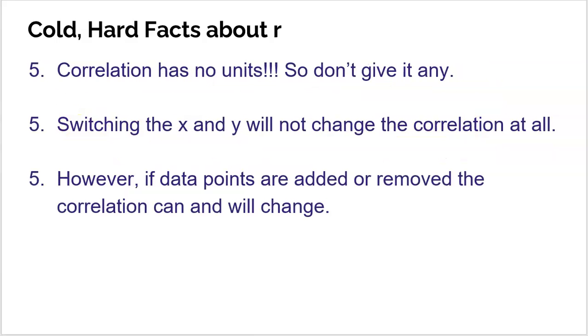So correlation has no units. I actually said that earlier. Don't give it any. If somebody tries to give correlation units, they're wrong. Switching the X and Y will not change the correlation at all. Remember, the formula is using multiplication of Z scores. So if you just switch the X and Y around, it might matter to your scatterplot, it might matter to the direction of your problem, but it actually doesn't matter to correlation at all.